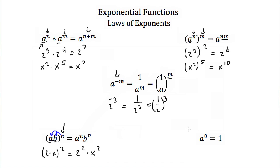The last law of exponents we're going to talk about is when we have a zero power. Anything to the 0 power is 1. 2 to the 0 power is 1. 10 to the 0 power is 1. Any number to the 0 power is equal to 1.